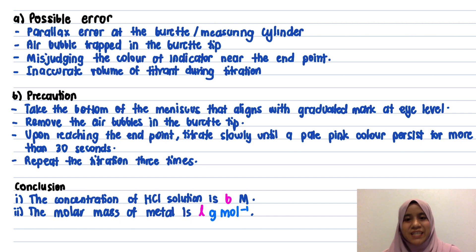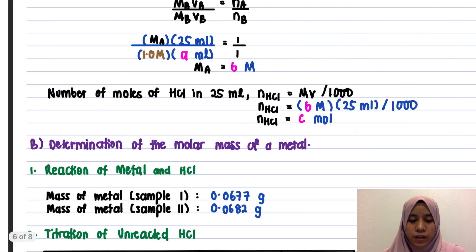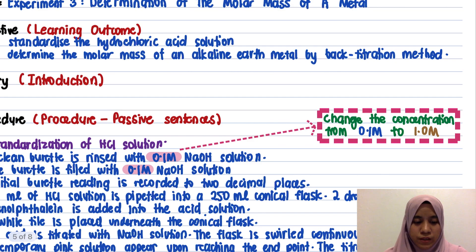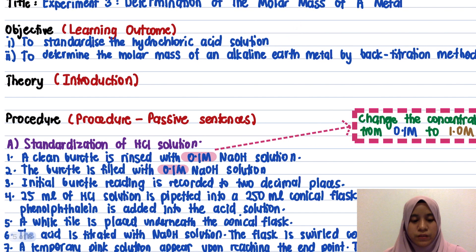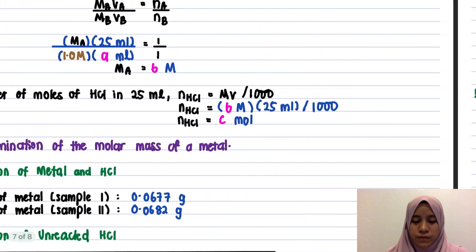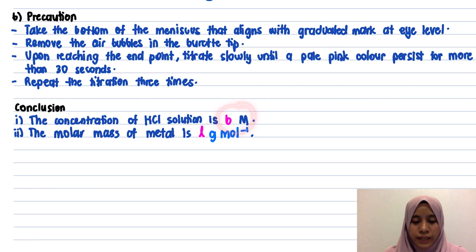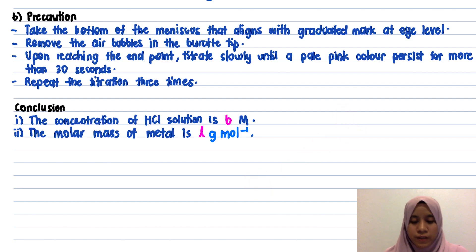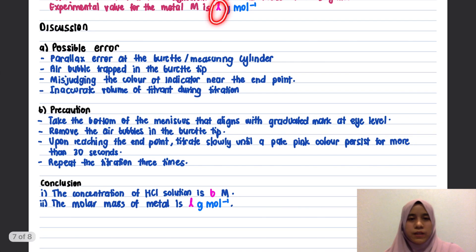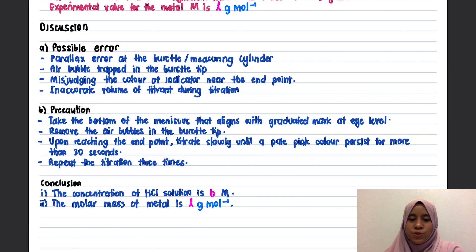Last but not least is the conclusion. Remember, you must answer based on your objectives. The objectives were to standardize the HCl solution and determine the molar mass of the metal. So state: the concentration of HCl is [your calculated molarity], and the molar mass of the metal is [your calculated value]. That is the end of the lab report for Experiment 3. The experiment itself is straightforward but the calculation is complex. Good luck everyone, thank you.